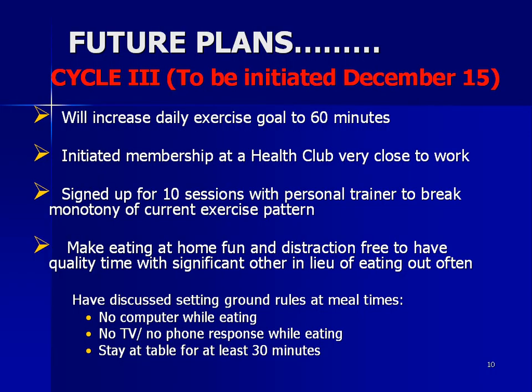Cycle three: having studied the data from cycles one and two, we are poised to enter the next improvement cycle. Plans to be initiated December 15 include increasing the daily exercise goal to 60 minutes, building on the previous goal to hardwire the new practice. I have initiated membership at a health club a mile from work and signed up for 10 sessions with a personal trainer to break the monotony of treadmill exercise. I've also discussed ground rules at meal times with my process owner — no computers, no TV or phone responses while eating, and we've agreed to stay at the table for at least 30 minutes during meals. Thank you.